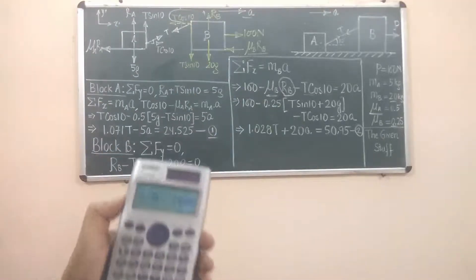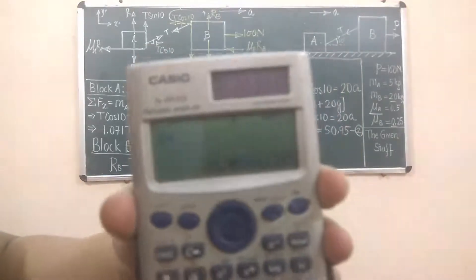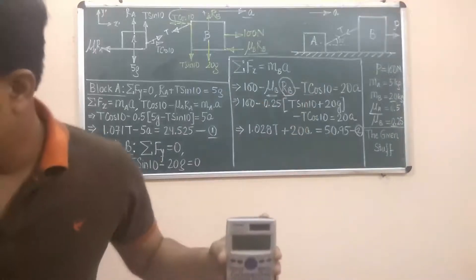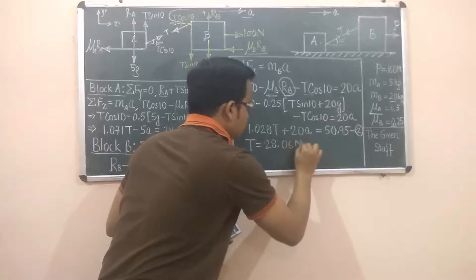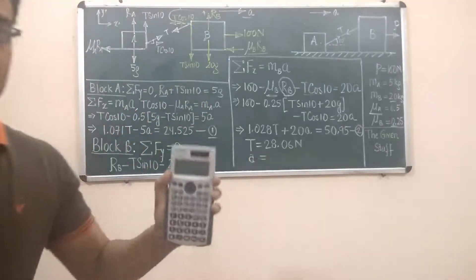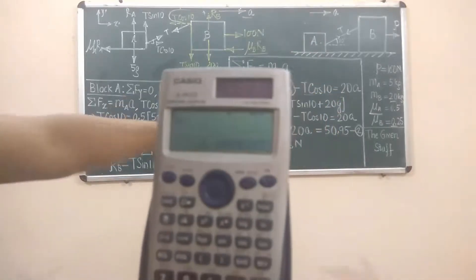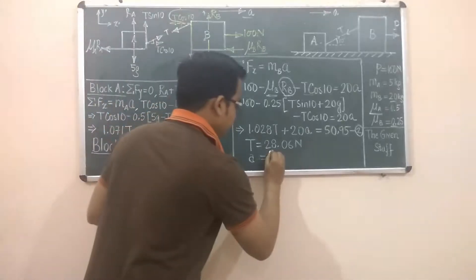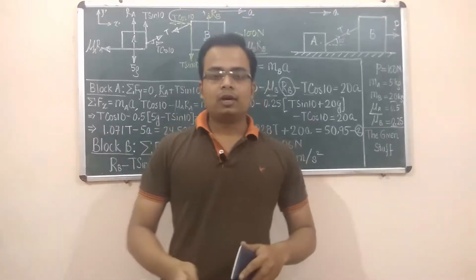Once all data is entered and I press the equals sign, I get the value of x, which corresponds to tension T. The result is 28.059, which rounds to T = 28.06 Newtons. Pressing equals again gives y, which corresponds to acceleration 'a'. The value obtained is 1.105 meters per second squared.